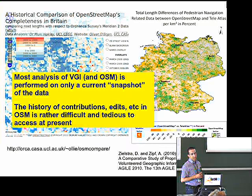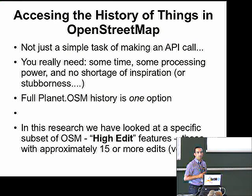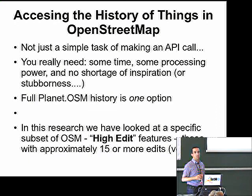So what about the history? How did the object you're looking at actually evolve to its current state? Accessing history in OpenStreetMap is not very easy — it's not a simple case of just making an API call. You really need some time on your hands, some processing power, and no shortage of inspiration or stubbornness.